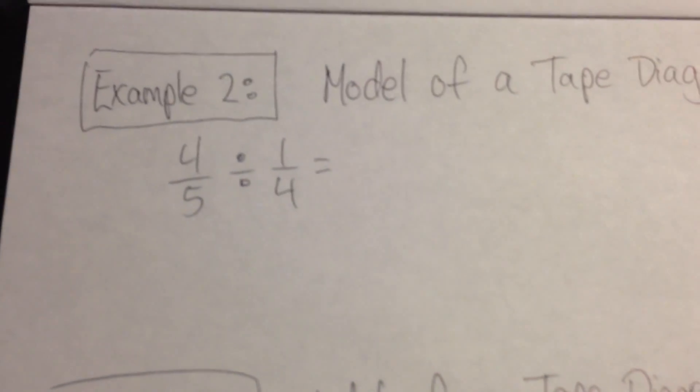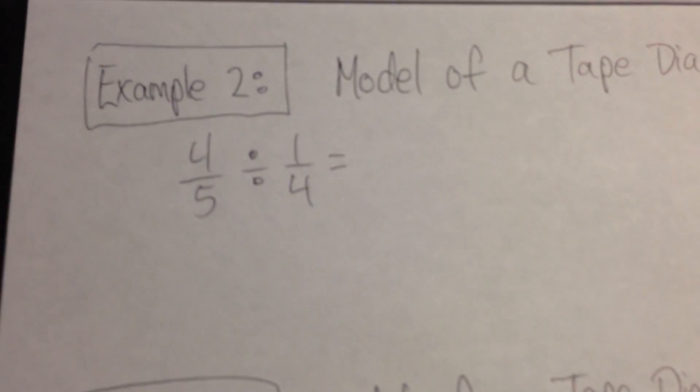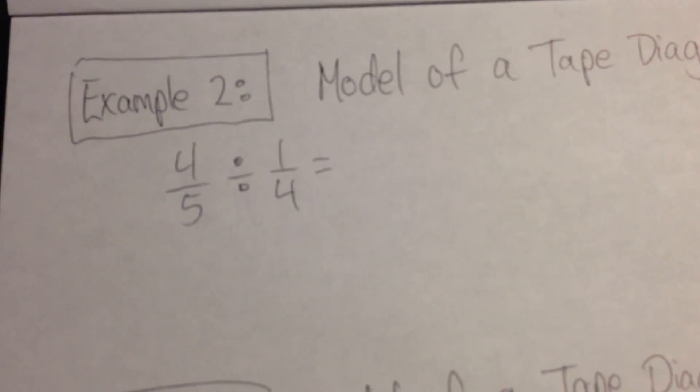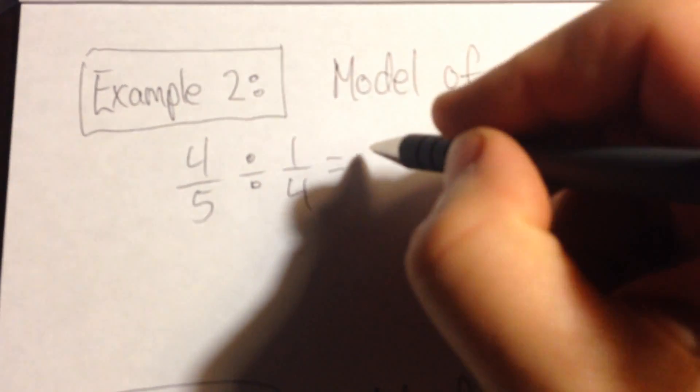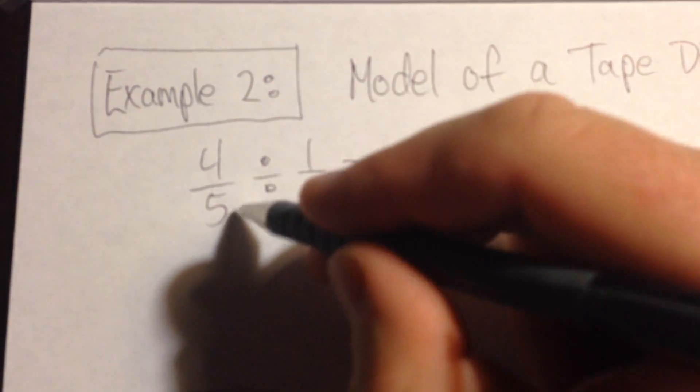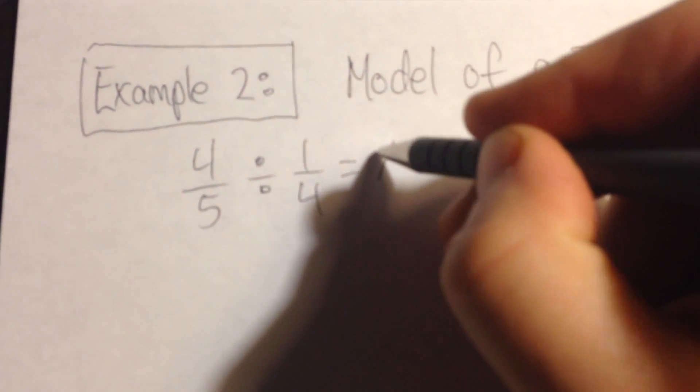This time, we're going to divide a fraction by a fraction. Remember that in my first example, it's always important to set this with a variable. So four-fifths divided by one-fourth is going to equal x.